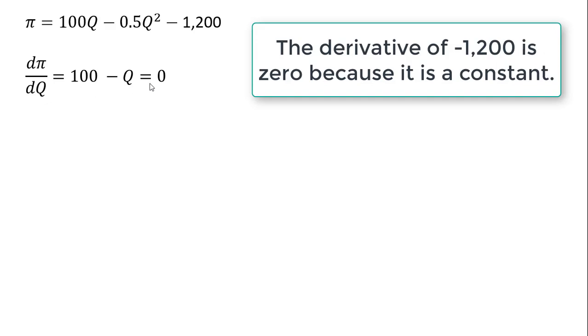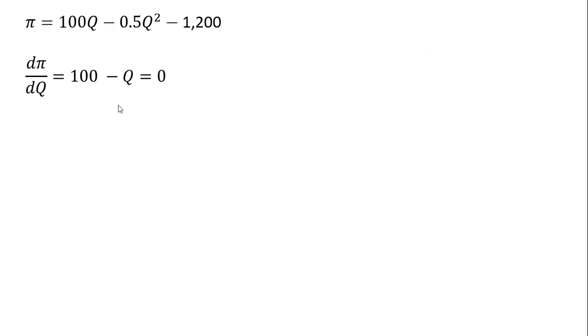Since we're maximizing, we set this equal to zero. So we're going to solve this for Q by adding Q to both sides. And Q equals 100. So that is the profit maximizing output.